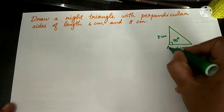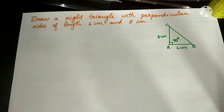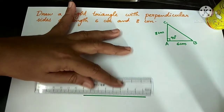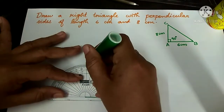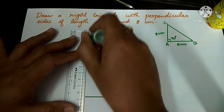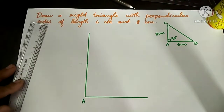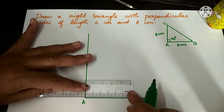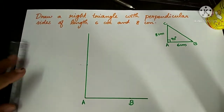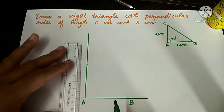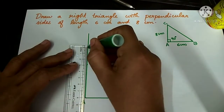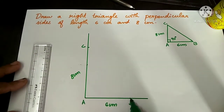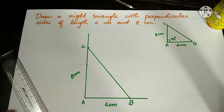Let us name this triangle as ABC. To draw this, first we need to draw a 90 degree angle. Using the scale, I draw a straight line, and by keeping the protractor at one end, I mark 90 degrees and join the point to the line. Mark this point where they meet as A. From A to B it is 6 cm, so by using the scale, I mark 6 cm and mark it as B. From A to C it is 8 cm, so I mark 8 cm and mark it as C. Then join point B to point C — this is our required triangle.